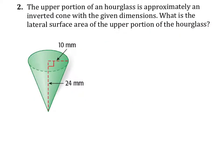Okay, here we have a cone, and let's read the problem. The upper portion of an hourglass is approximately an inverted cone with the given dimensions. What is the lateral surface area? What is the lateral surface area of the upper portion of the hourglass?